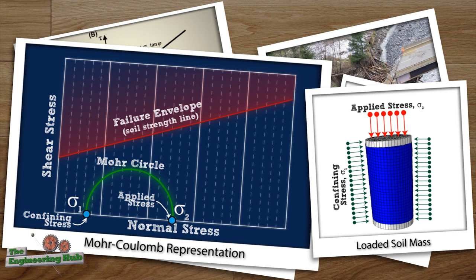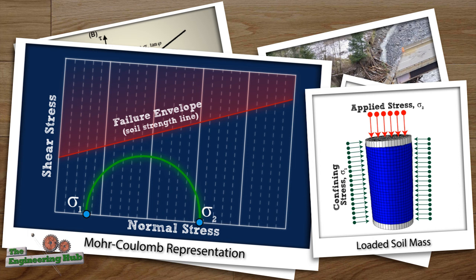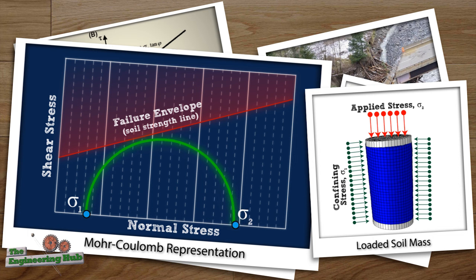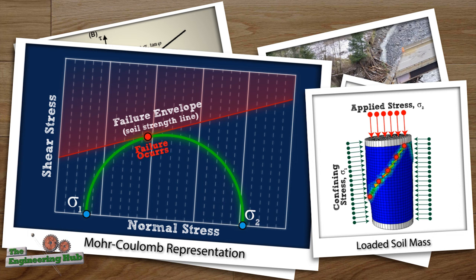These stresses are also known as the principal stresses of the material. Notice that to keep the circle small and away from touching the failure envelope, we need to increase the confining stress together with the applied stress. In theory, if the soil is well confined, its carrying capacity can be increased indefinitely. Note that every point in the soil mass draws a separate circle on the graph. As the soil continues to get loaded, the circles grow until one or more of them touch the failure line. The point in the soil mass whose Mohr circle touches the failure line first is where the sliding in the soil will occur. This usually happens simultaneously for a whole plane in the material, which initiates a sliding failure.